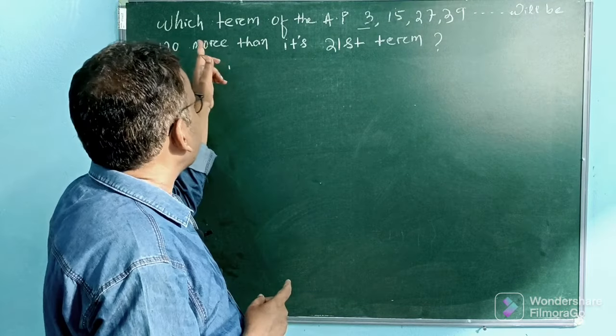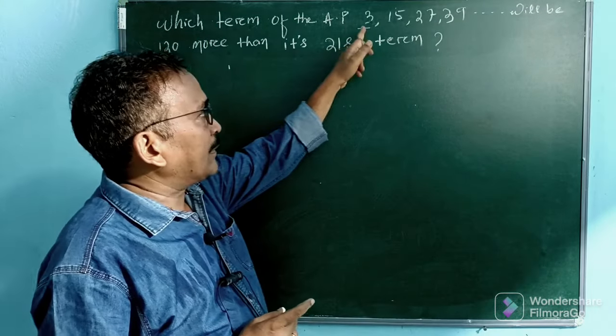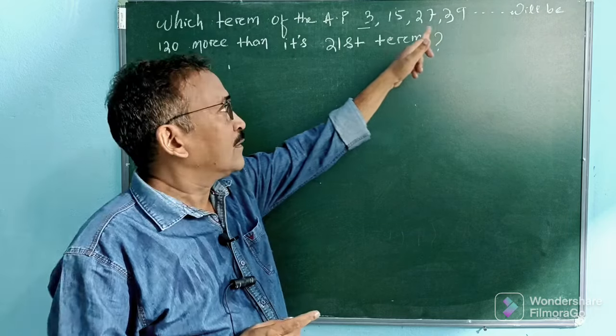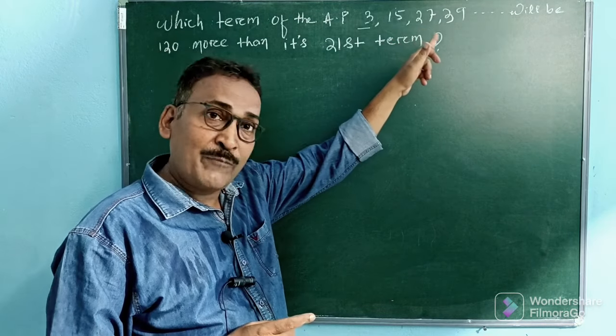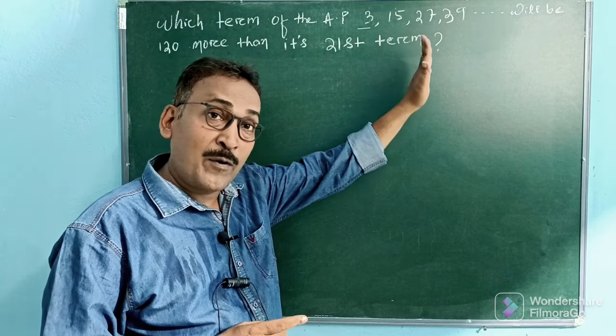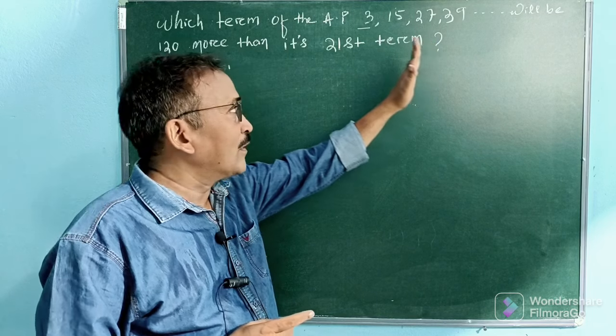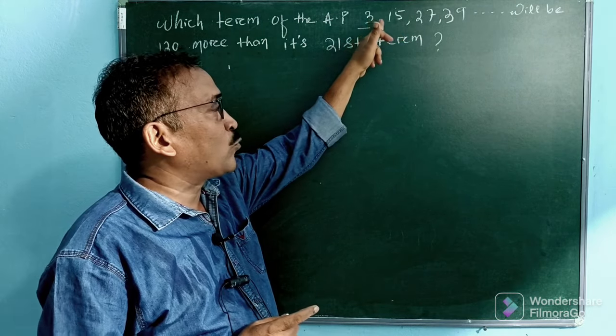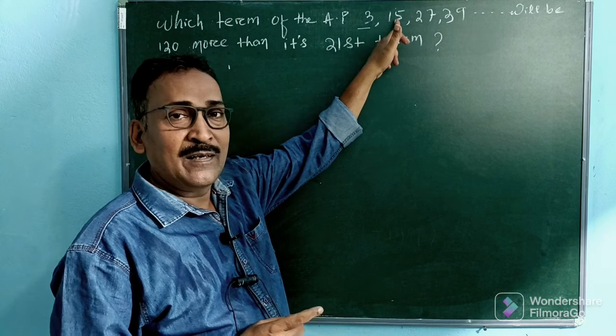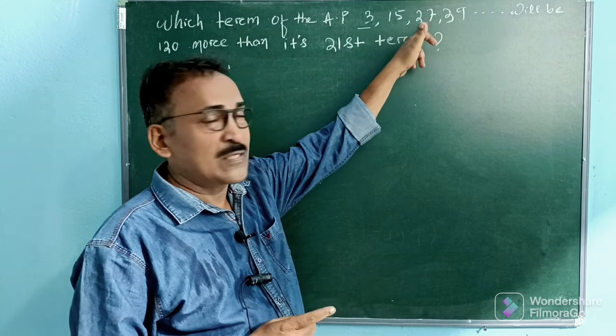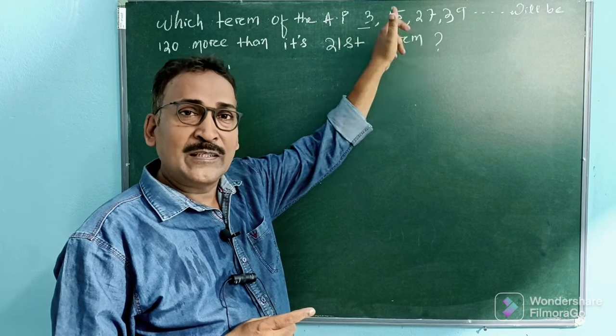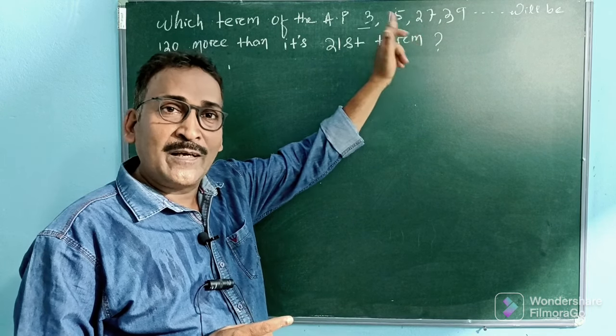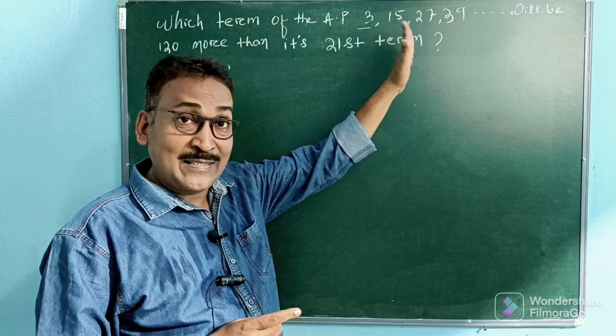First see, which term of the AP in this series number series? This is in the form of AP because its common difference is constant. So here the common difference is 15 minus 3, that is 12. And 27 minus 15 is 12, 39 minus 27 also 12. So here d is constant. So here this series is in AP.